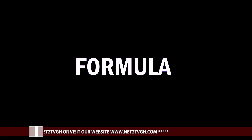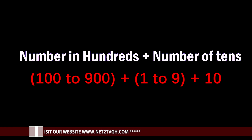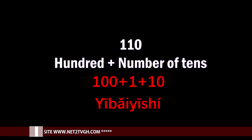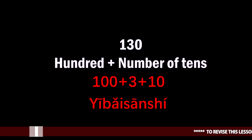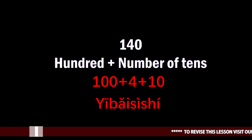With 110, you say 100 and then mention the number of tens. With 120 there are two tens, so you say 'yi bai' plus two plus ten: 'yi bai er shi' — that is 120. The formula is: 100 plus the number of tens. So 110 is 100 plus one plus 10; 130 is 100 plus three plus ten. For 140, you take 100 and the number of tens which is four plus ten: 'yi bai si shi.'